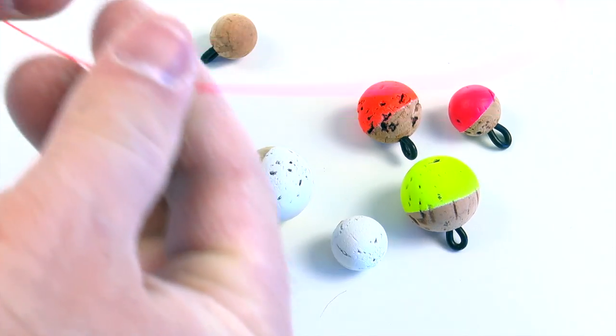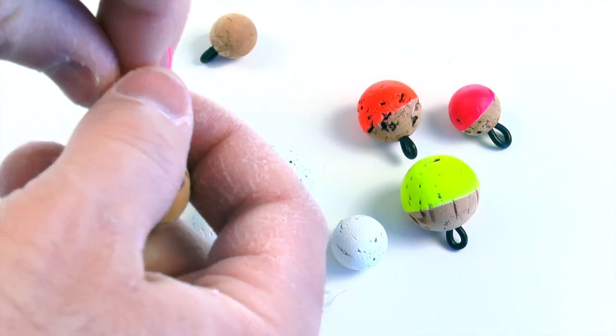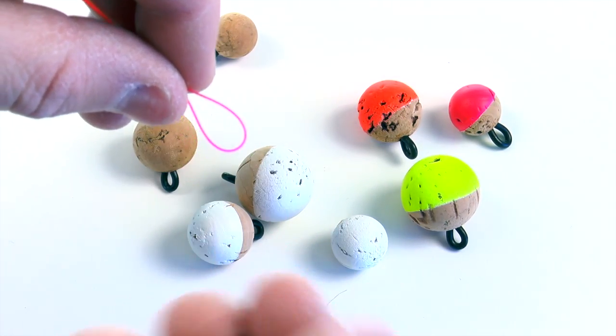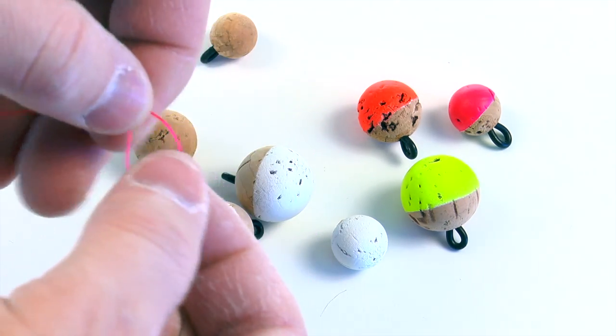So what I have here is just a bright piece of tippet material. I have some amnesia here so I can show you how to use this. Just say this is your leader. You just loop your leader just like I did. You take it and make a loop in it.